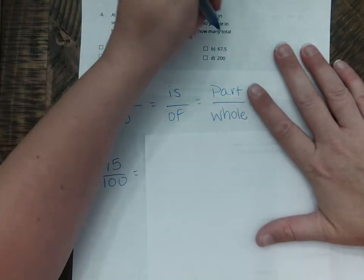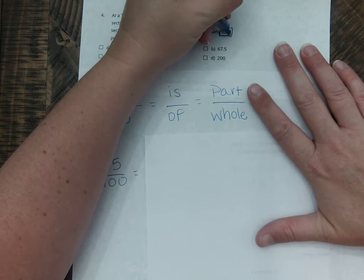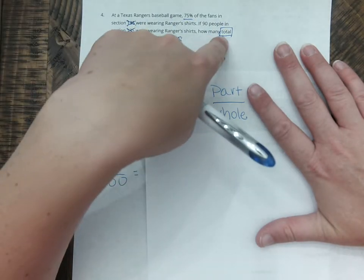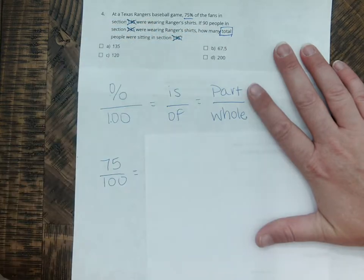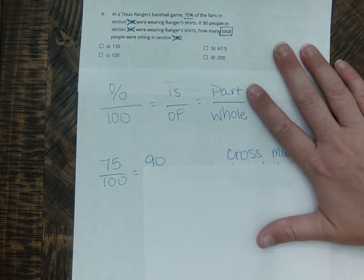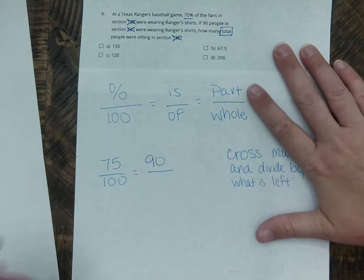Let's look back at the question. It says how many total people were sitting in the section. So if it's asking me to find the total, what do you think 90 is? 90 is the part. So we can put 90 over X.